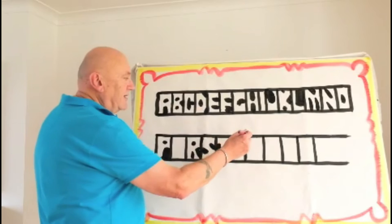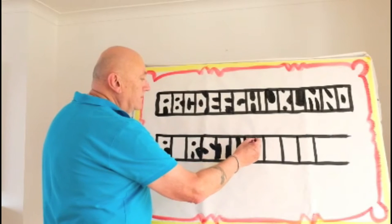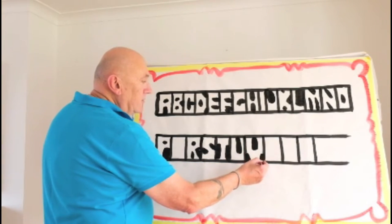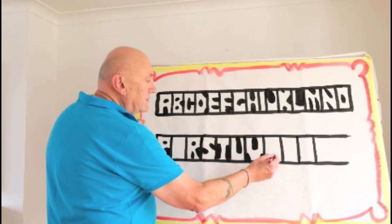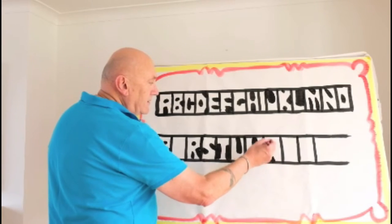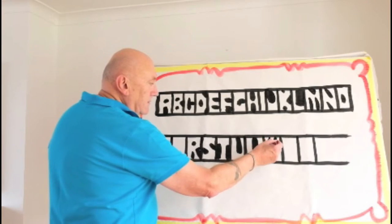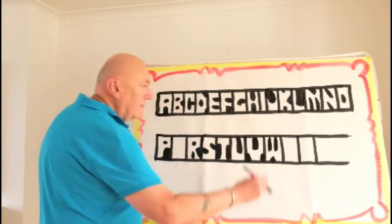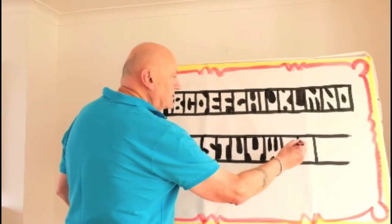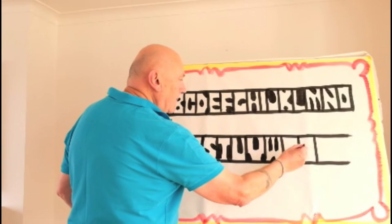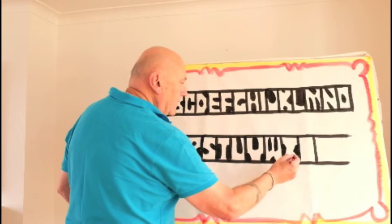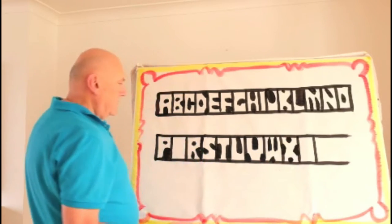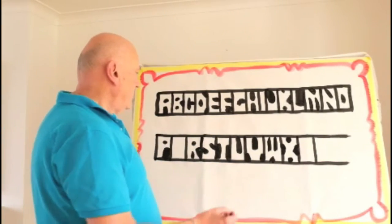U, then V is much the same as the U except you take those corners out — U, V. W is another wide one, so I put a little bit down the bottom — U, V, W.